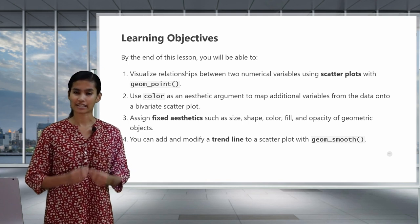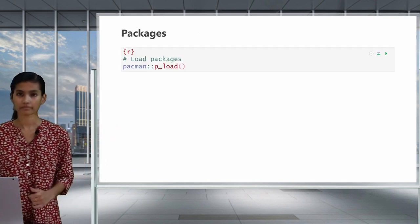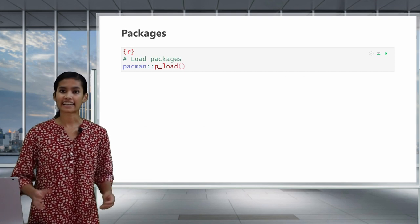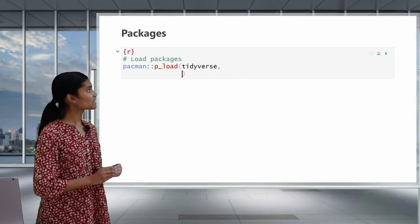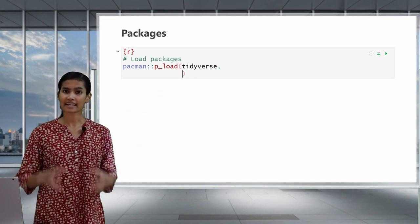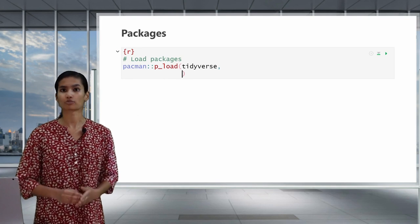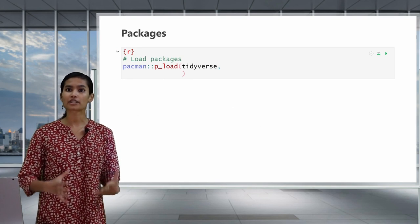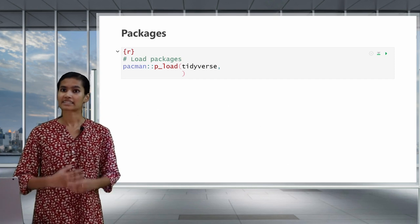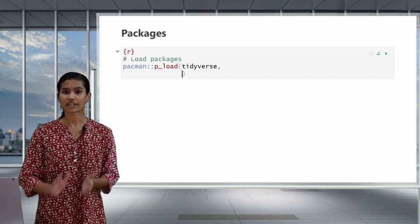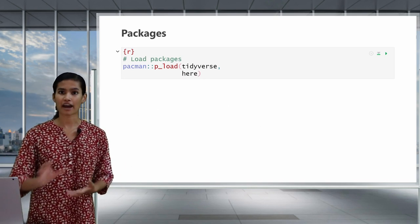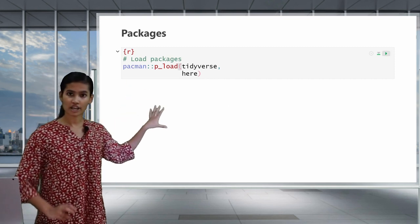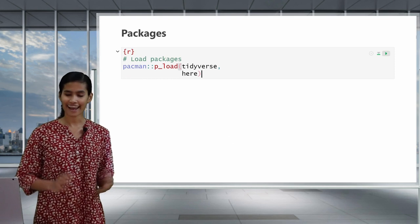First, let's load in the packages that we're going to need in this lesson. The first package we're going to load in is the tidyverse. Tidyverse is a meta package, which means when we load this in, it will also load in a set of core packages, including ggplot2, which is the main package for data visualization that we'll be using in this lesson and in this course. The second and final package we're going to load is called here. The here package simply helps us more easily and accurately reference files that we want to load in. Run this chunk to load these packages into your R session and now we're ready to go.